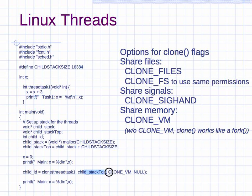For flags, to get started all you need is the CLONE_VM flag, which means share memory — that is the basic idea. You can bitwise OR this with other options, such as flags to share files or signal handlers. Check the man page for clone to see all the available options. Finally, you need a NULL at the end to terminate the argument list.